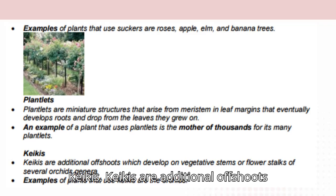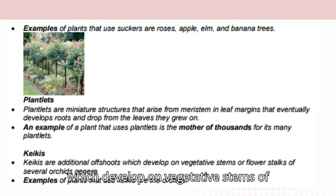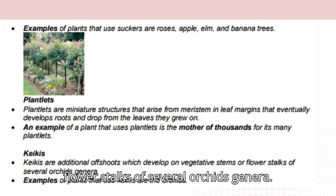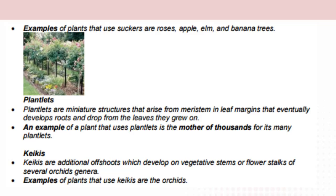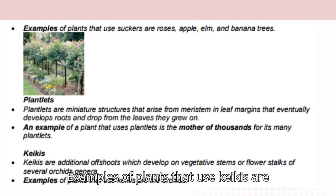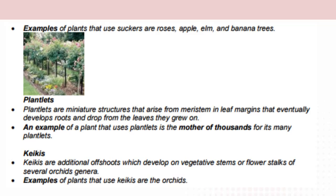Keikis: keikis are additional offshoots which develop on vegetative stems or flower stocks of several orchid genera. Examples of plants that use keikis are orchids.